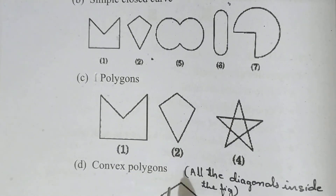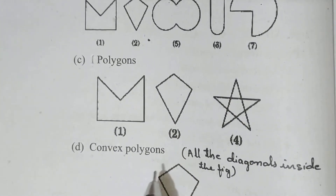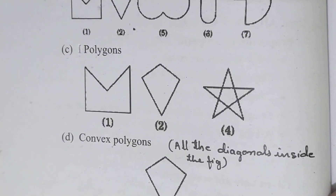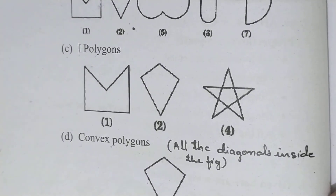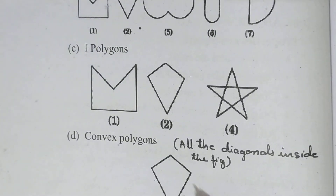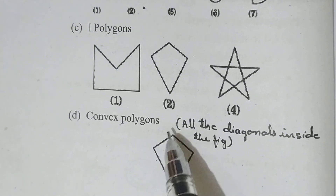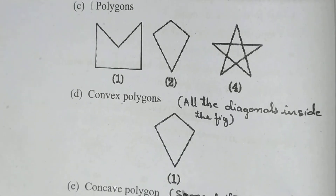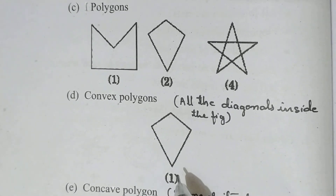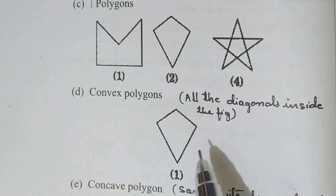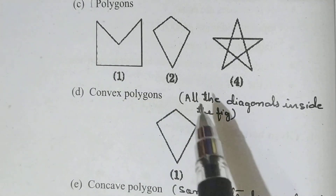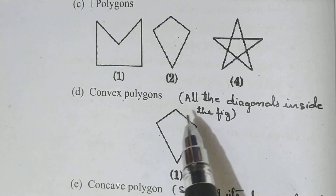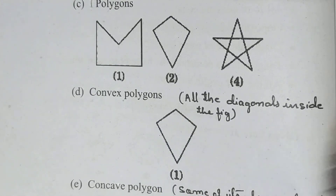Next, convex polygons. What is a convex polygon? All the diagonals are inside the figure. In this polygon we can draw diagonals inside the figure. So figure number 1 is a convex polygon. We cannot draw a diagonal outside the figure.